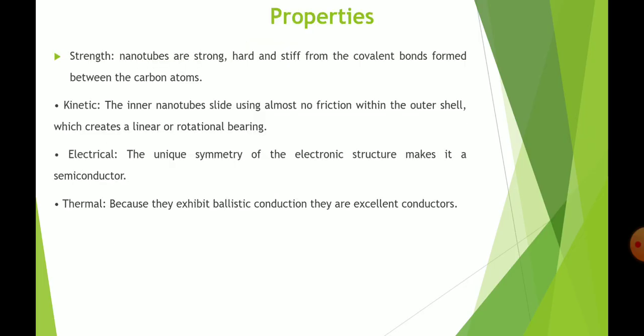Properties of nanotubes: Strength — nanotubes are strong, hard and stiff due to the covalent bonds formed between carbon atoms. Kinetic — inner nanotubes slide with almost no friction within the outer shell, creating a linear or rotational bearing. Electrical — the unique symmetry of their electronic structure makes them semiconductors. Thermal — they exhibit ballistic conduction and are excellent thermal conductors.